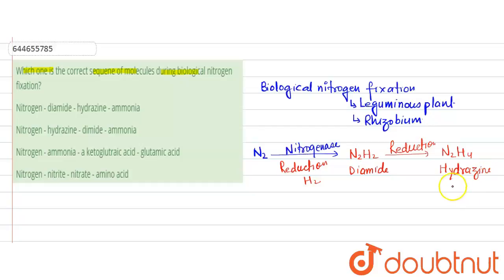Then this hydrazine undergoes reduction to finally form two molecules of ammonia, NH3. So this is the final product of the cycle.